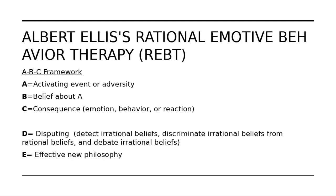The emotion, behavior, or reaction is a result of B — the belief or cognitions about the event — rather than the event itself. What you want to add into this equation is D, which is disputing. You want to help your client detect their irrational beliefs, discriminate between irrational and rational beliefs, and then debate those irrational beliefs — testing them against what is realistic and rational. Once you've debated and corrected those irrational beliefs, the client can adopt E, an effective new philosophy of life based on rational thoughts and the events as they actually are, as opposed to their irrational beliefs about the events.